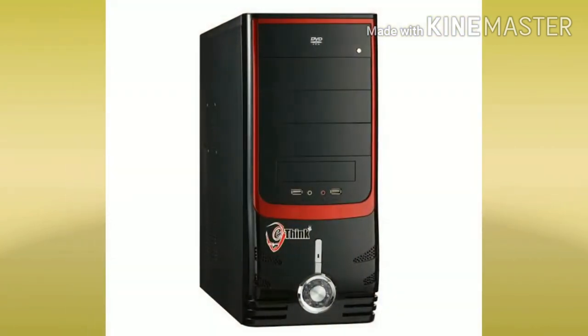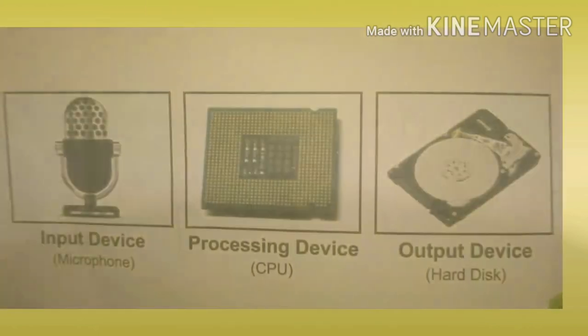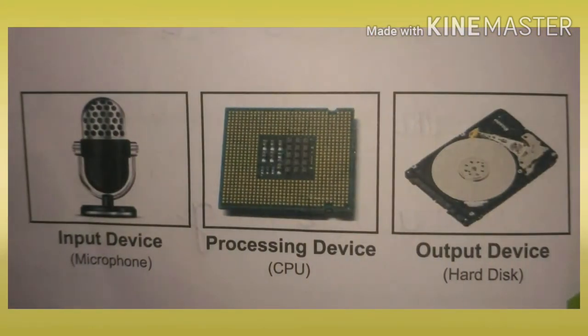CPU, or Central Processing Unit, is the most important processing device in a computer, because CPU is known as the brain of a computer. CPU is the brain of old computers and many household and electronic devices. CPU is also known as microprocessor. Look at the CPU receiving sound from a microphone and sending the MP3 file to the hard disk. Here, the input device is the microphone, the CPU is the processing device, and the hard disk is the output device.